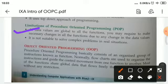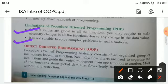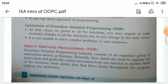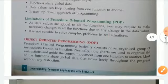Data values are globally shared to all functions without any restrictions, and all functions are liable to change the data values. In real situations, it is not suitable to solve complex problems, because if data values communicate randomly from function to function, the program becomes very complex.